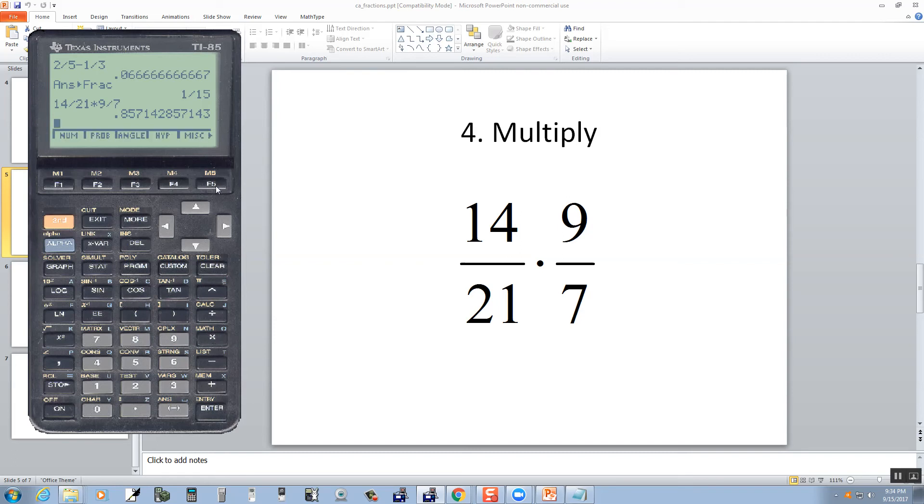So I'm going to do second, and then the times for the math option. I want to choose miscellaneous, so I'll push the F5 below it. I want to choose the more to go to the second page. And I want frac, so I'll do the F1 below it. And then push enter. And that's our answer. I'll press exit a couple times, get rid of that, and then press clear to clear that off.